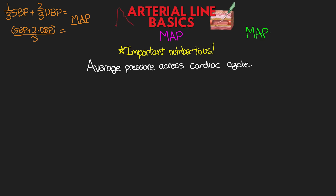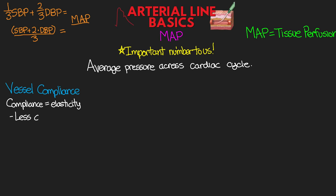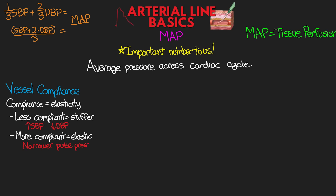The MAP is our true indicator of tissue perfusion, which is ultimately the end goal. In the ICU, we often are really just concerned with our patient's MAP. Now, there are situations in which we try to maintain systolic blood pressure within a certain range. There are some things to keep in mind which play an important role in our focus on MAP. The first is vessel compliance — compliance we can think of as elasticity. The less compliant, the stiffer the vessel. In less compliant vessels, we see higher systolic blood pressures and lower diastolic blood pressures. More compliant vessels are better able to maintain a narrower pulse pressure, which is the difference between systolic and diastolic pressure. Regardless of a patient's compliance and the differing systolic and diastolic pressures, the MAP will remain relatively the same — hence our reason to titrate medications based on this value.